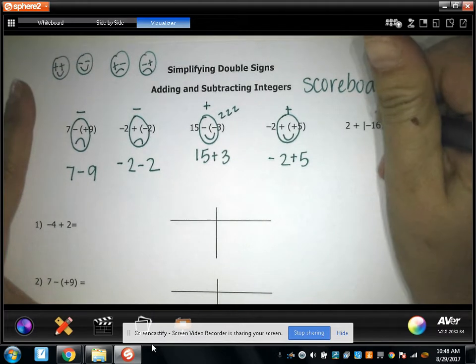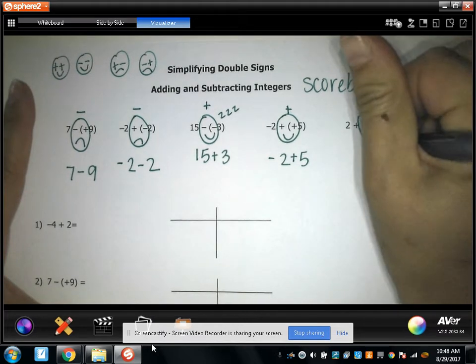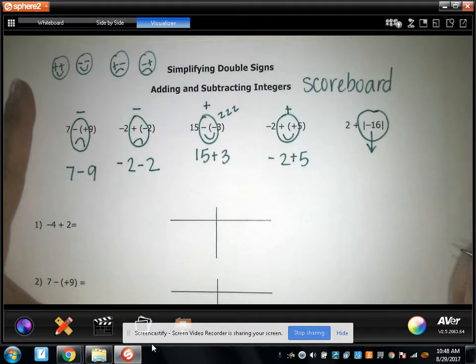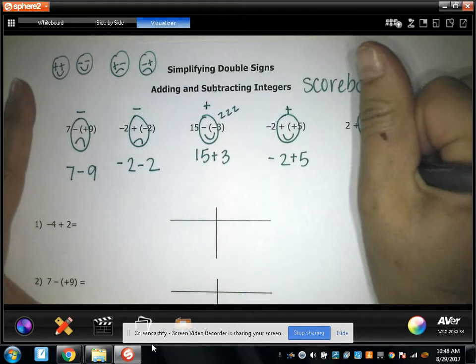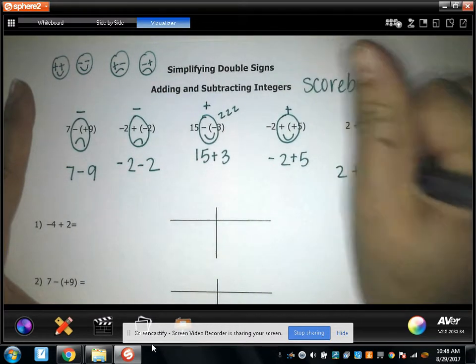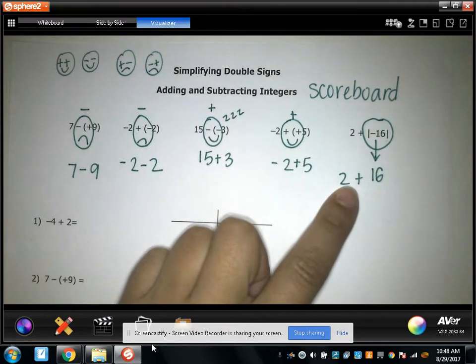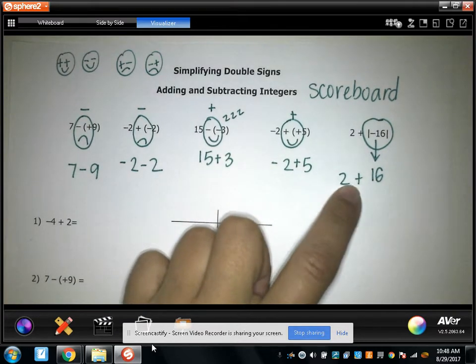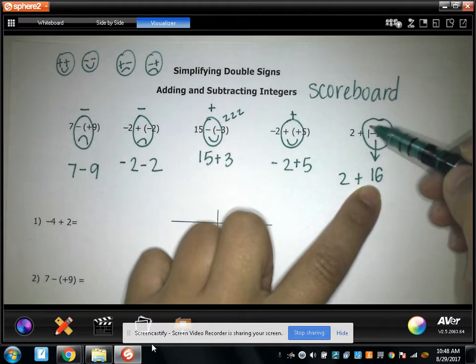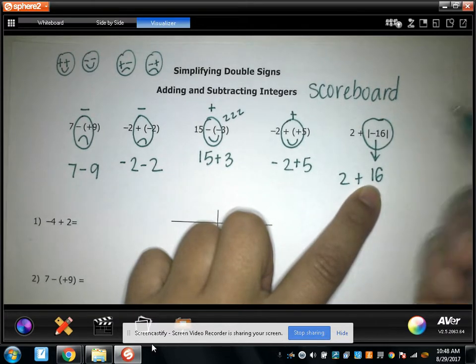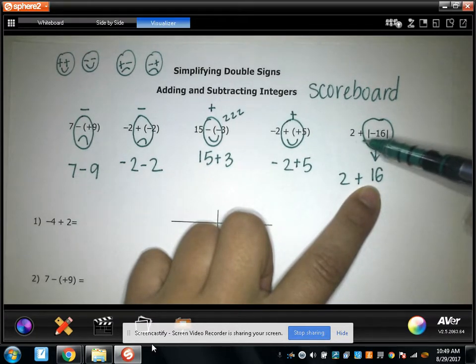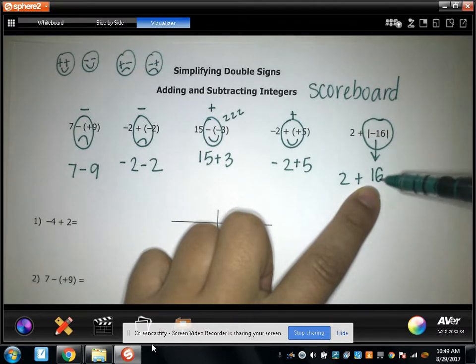So what you do is you take the absolute value first. Well the absolute value of negative 16 is 16. And by taking the absolute value, you'll end up with just one sign anyway. And your answer will be correct. See how this is 2 plus 16? If I tried to circle these two signs, I'd have made them into a negative because it looks like someone got hit in the eye. And that would have been wrong. When there's absolute value, take the absolute value first. And then you'll just end up with one sign.